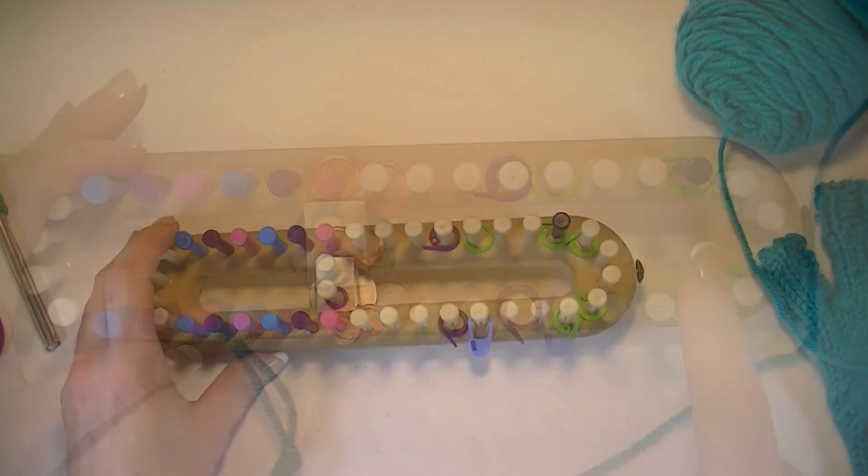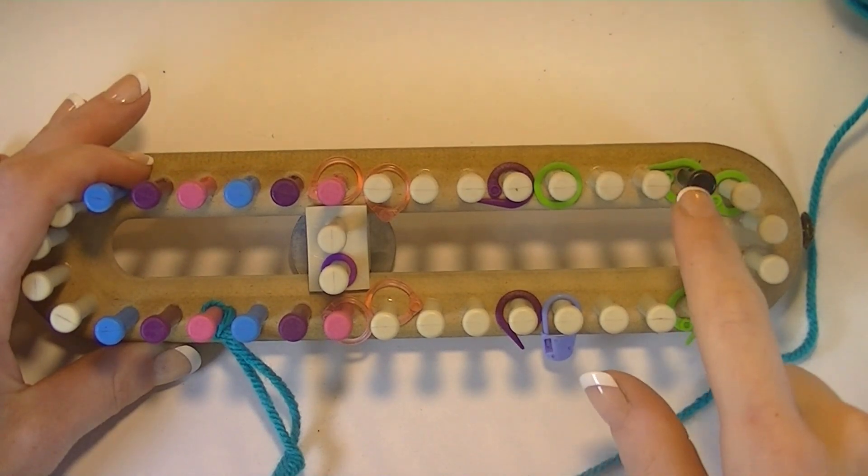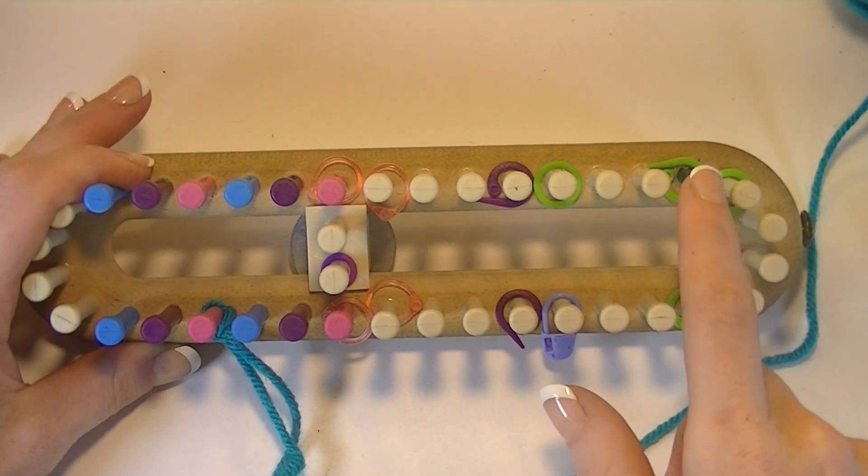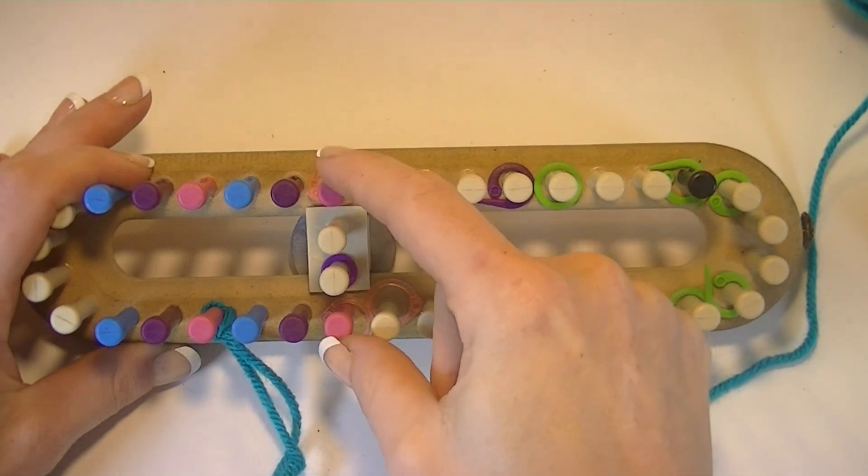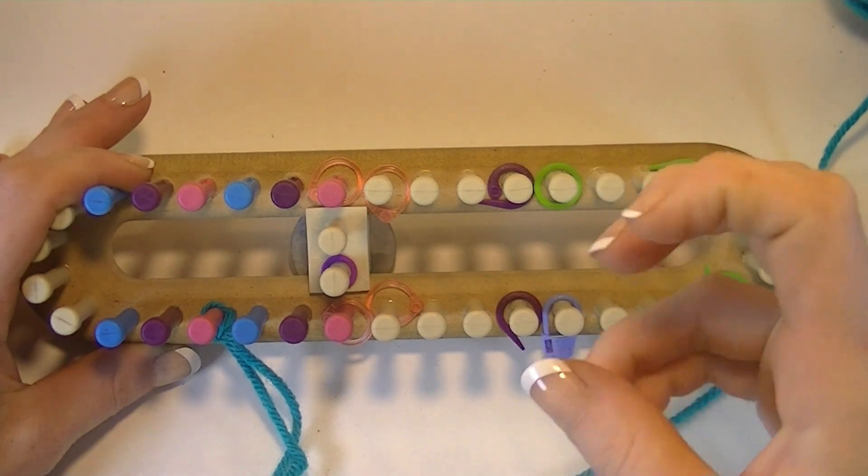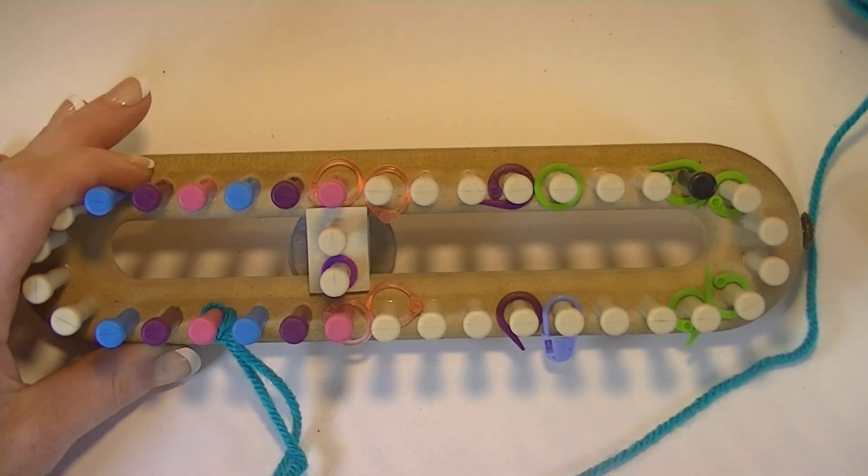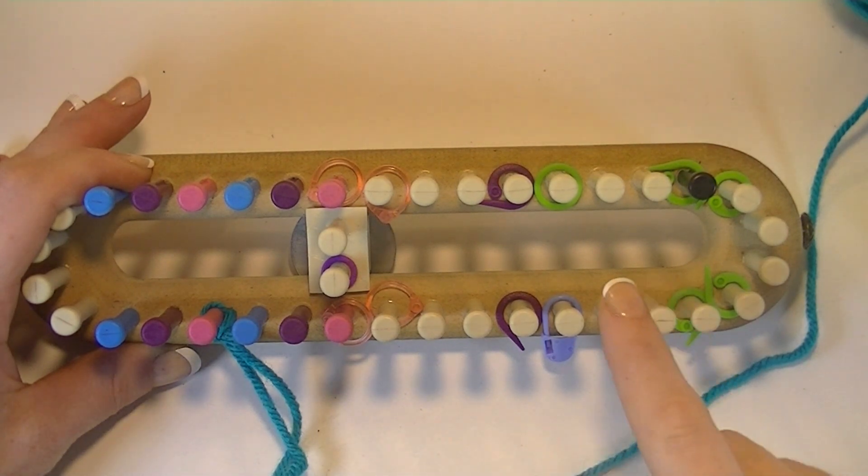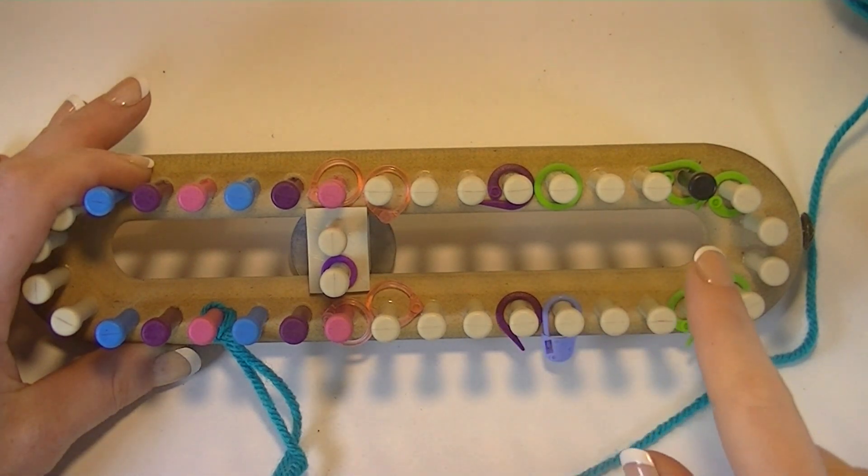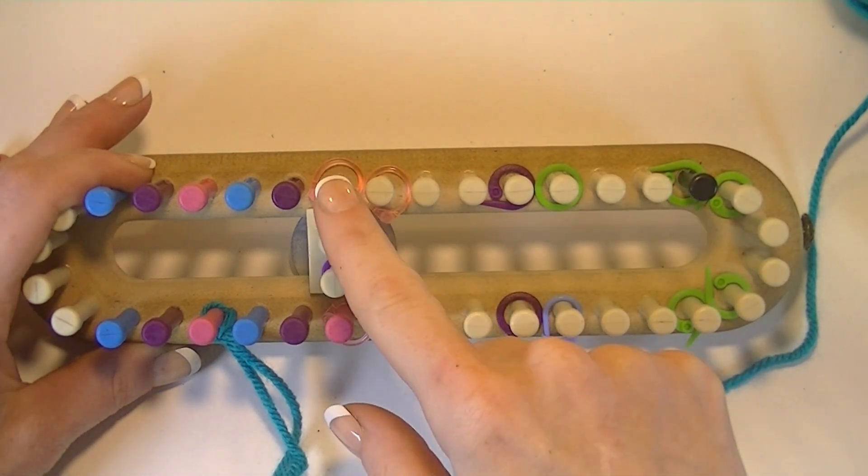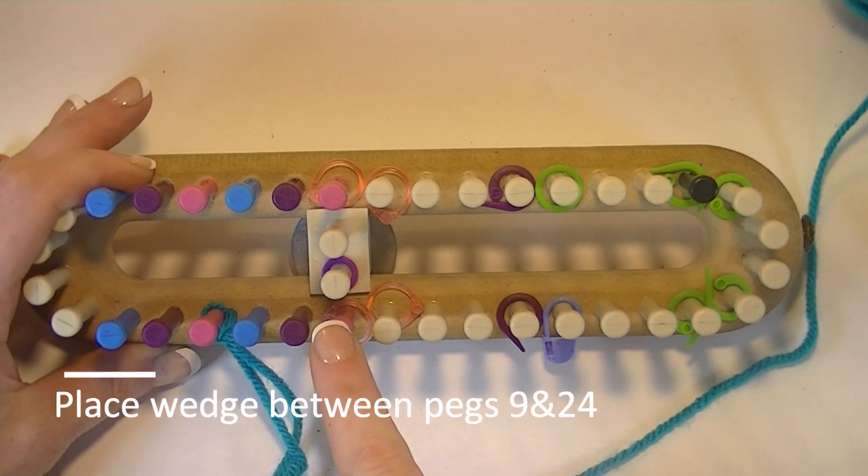Let's get started. I always count the black peg as peg one. So our loom adjuster I'm doing between the first two marked pegs and two pink pegs. So that is the smallest size, although the type of yarn you use does make a large difference in the size.